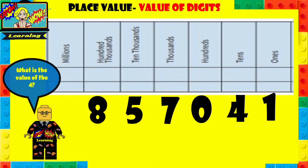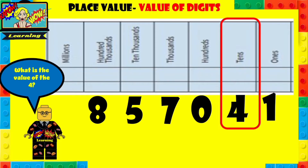What is the value of the four? So 857041 — what is the value of that four? You can pause this, try to find the answer, and then play to see if you're correct. So the four is in the tens. Four tens means the answer is 40.